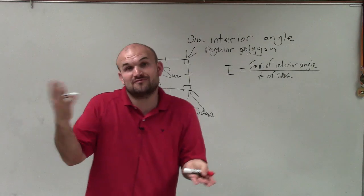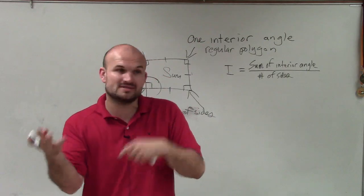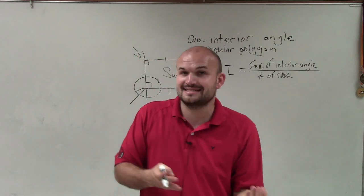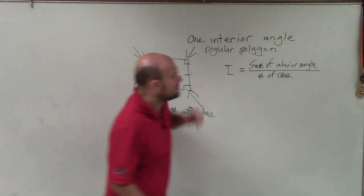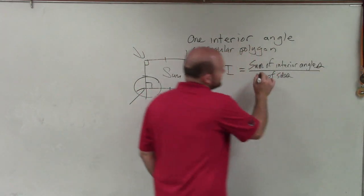A quadrilateral has four sides, four angles. A triangle has four sides, four angles. An octagon has eight sides, eight angles. So it's the same thing. So I need to find the sum of the interior angles and the number of sides.